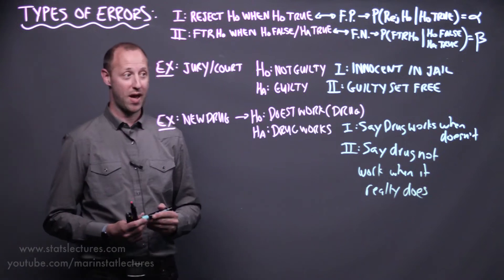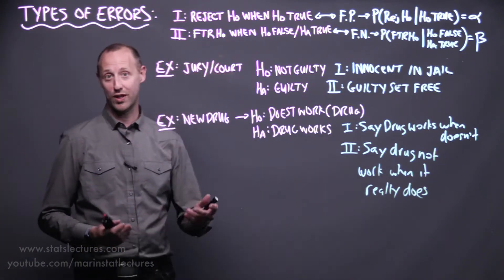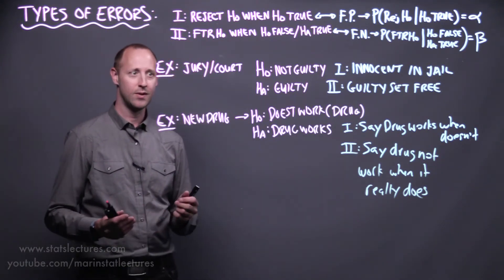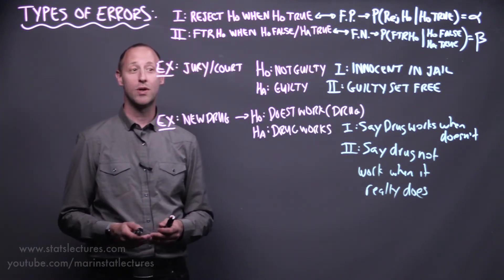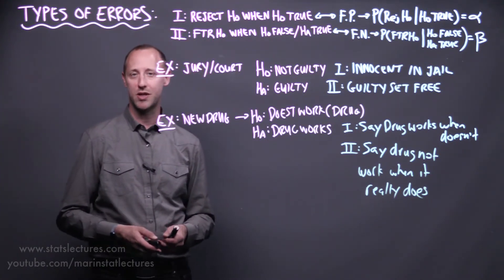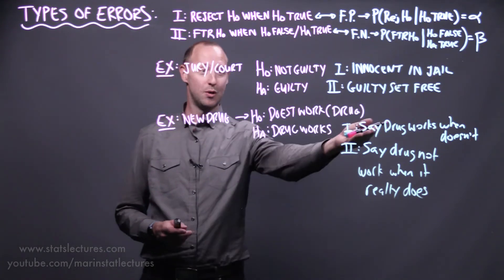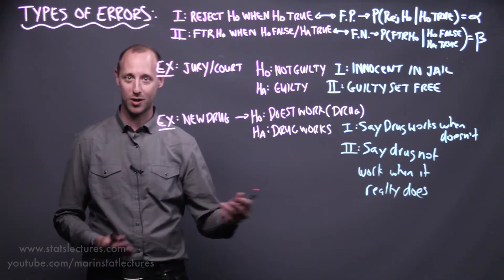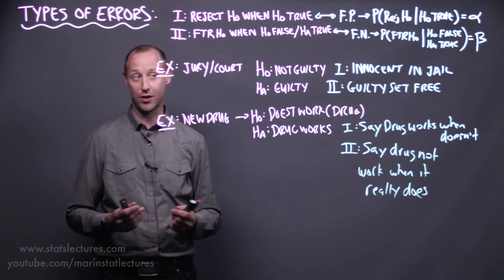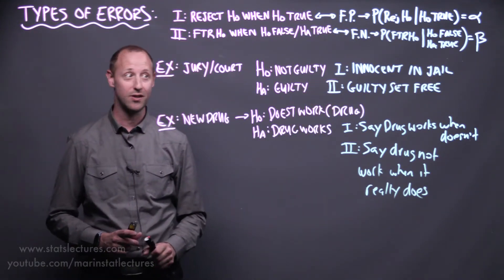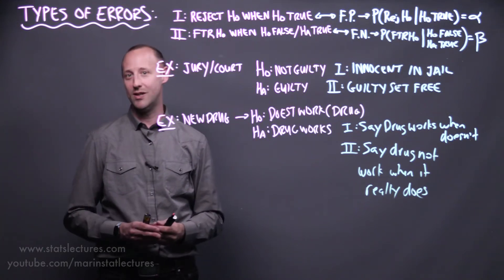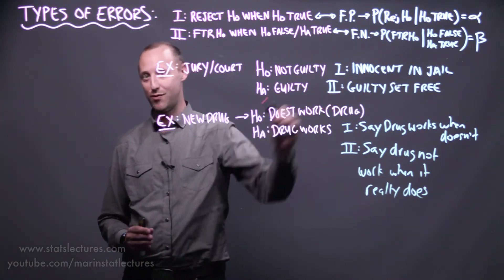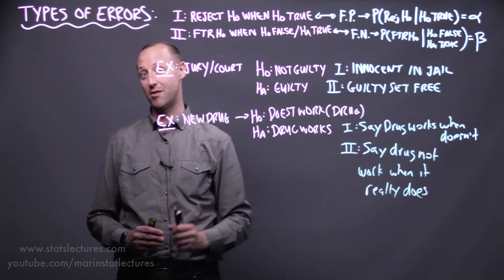Both of these errors are bad. A Type 1 error means we're approving a drug that doesn't really work. A Type 2 error means we have a drug that works but we're not approving it. Which one is more serious depends on the context — putting a drug on the market that doesn't work versus not approving a drug that is effective. Similarly, sending an innocent person to jail versus setting a guilty person free. As a society, we've chosen that we'd rather set a few guilty people free and minimize the number of innocent people sent to jail.